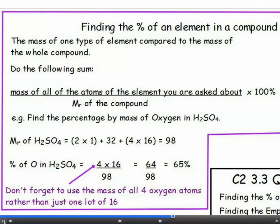Finding the percentage of an element in a compound by mass is relatively straightforward, as long as you can find the MR of the compound. So do practice finding the MR if you need to. To find the percent of oxygen in H2SO4, first find the MR of the H2SO4.